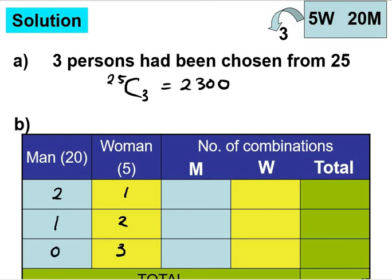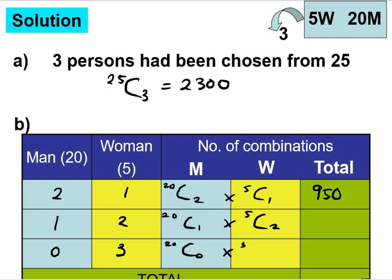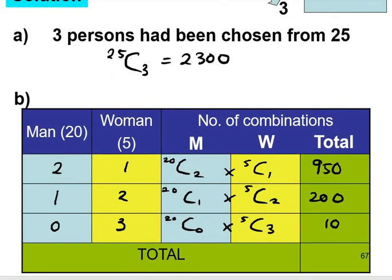Now we are going to calculate. 20C2 multiply with 5C1, the answer is 950. Or 20C1 multiply with 5C2, or 20C0 multiply with 5C3. We are going to add everything because it is an or. So the answer will be 1160.